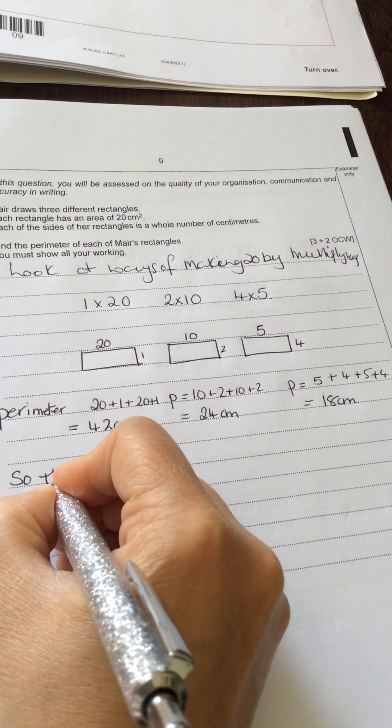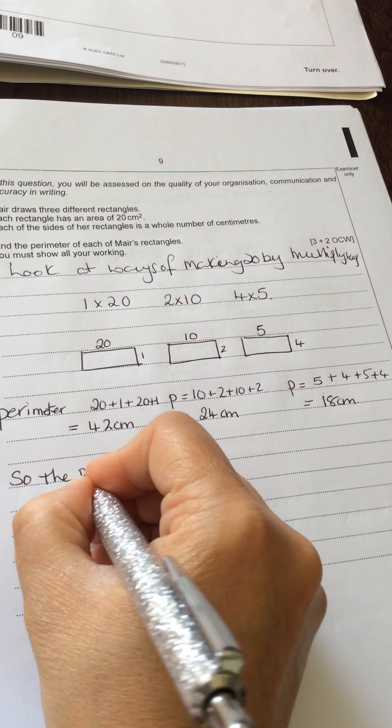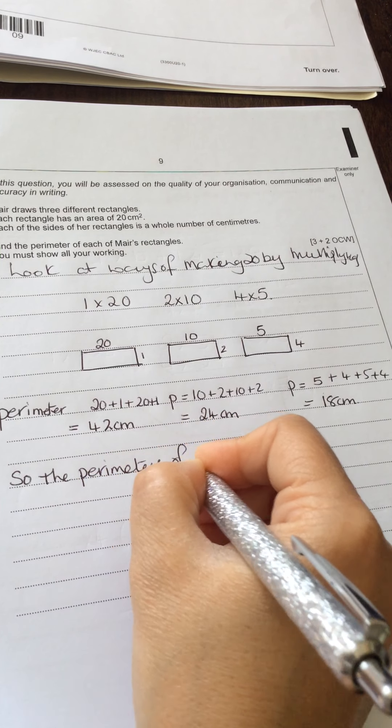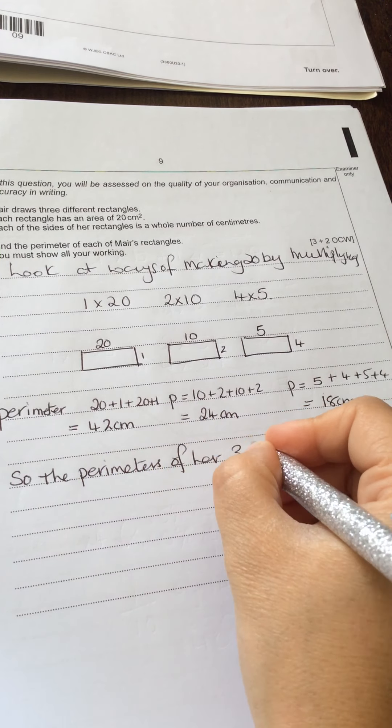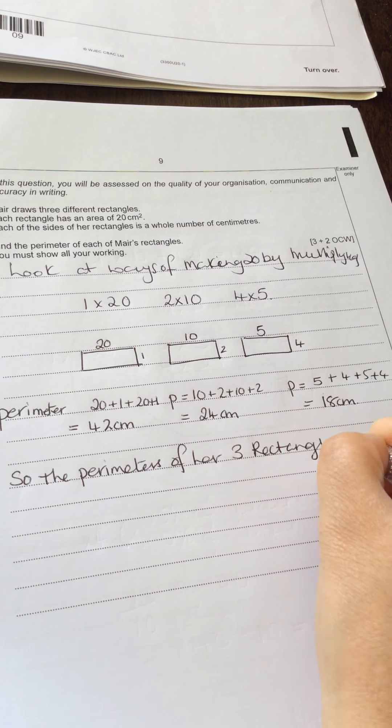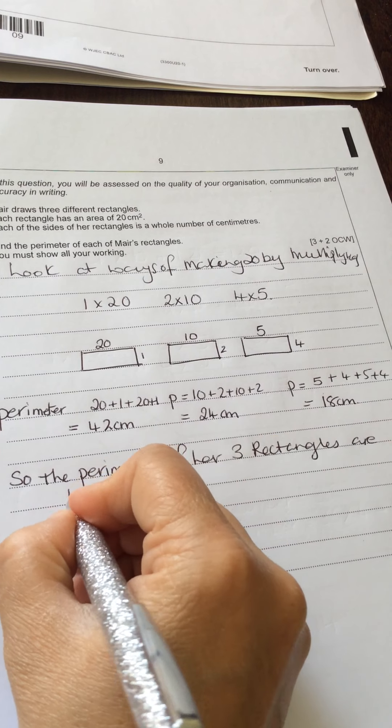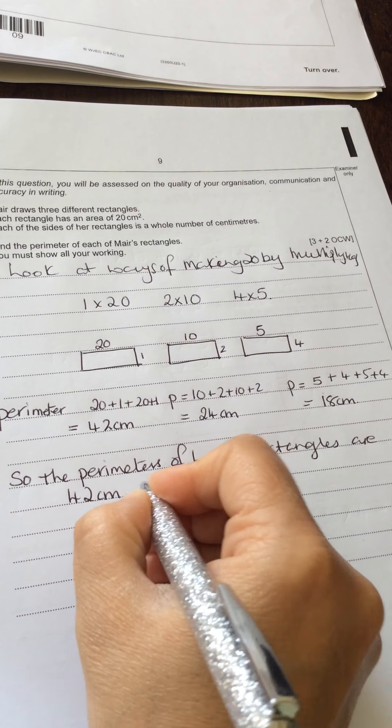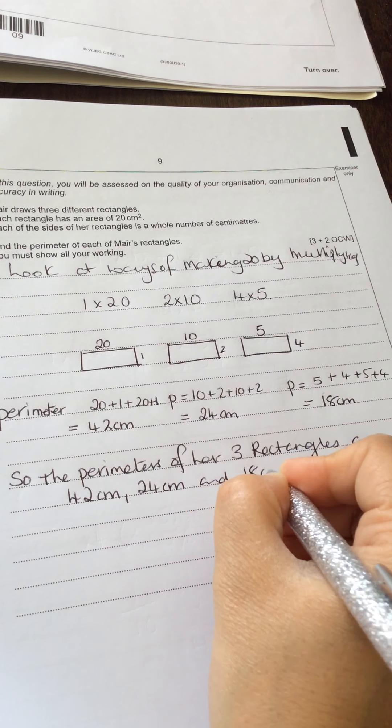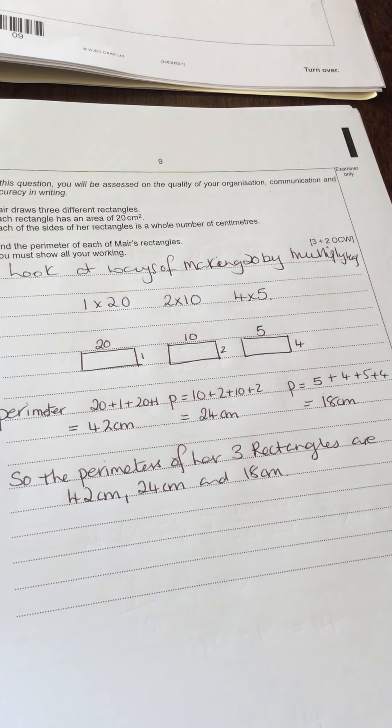So just to finish it off, to get the marks, the perimeter of her three rectangles are 42 centimeters, 24 centimeters and 18 centimeters. And that would get you the marks.